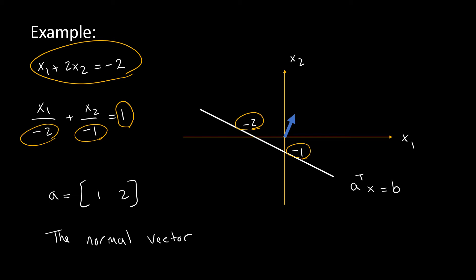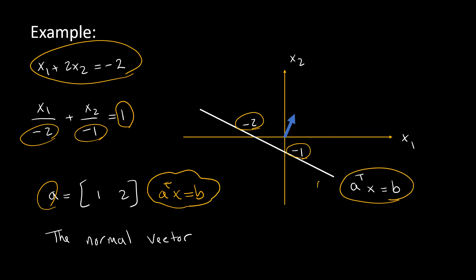Notice the direction of the vector a. We have a-transpose times x equals b, which is our hyperplane — shown as the wide line here. This vector is perpendicular to the hyperplane, and this is not an accident — it is always the case. The vector a = [1, 2] is called the normal vector, and it is always perpendicular to the hyperplane. You can see another example of a hyperplane in my video for exercise 2.5 from the Convex Optimization book — I'll put a link in the description below.